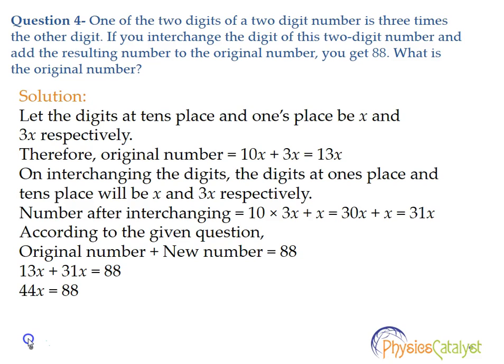Let's assume the tens place is x, then the unit place would be 3x. Therefore, the original number is 10x + 3x = 13x. On interchanging the digits, the digits at ones place and tens place will be x and 3x respectively.